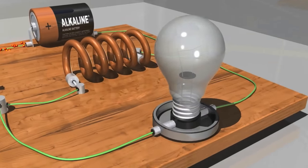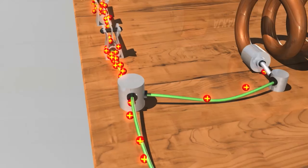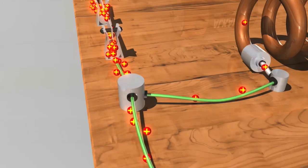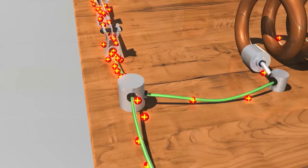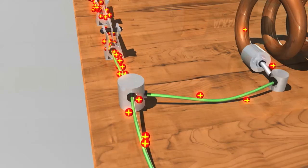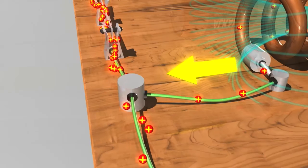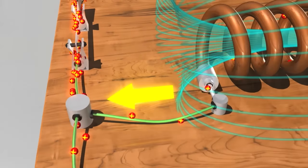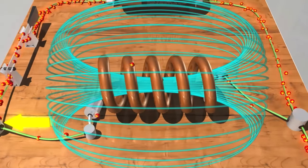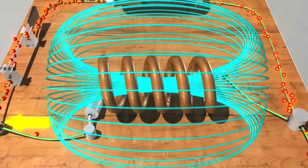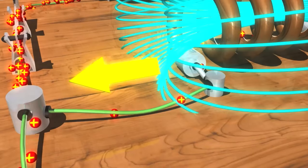At first, the current flows much more strongly towards the light bulb. This happens because as the magnetic field in the inductor grows, it induces its own voltage through Faraday's law. This is called electromagnetic induction. So the inductor here is creating a back EMF, represented by this yellow arrow.